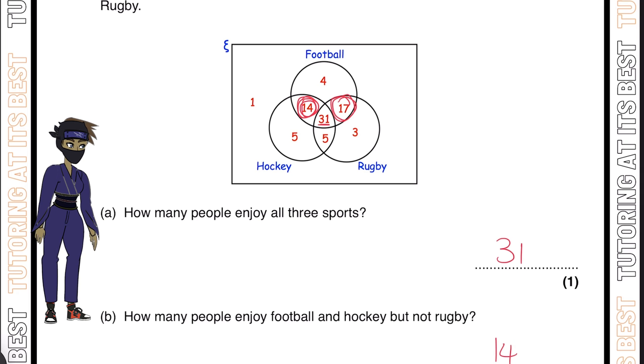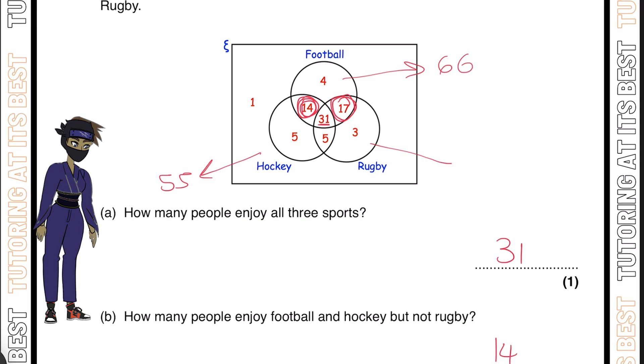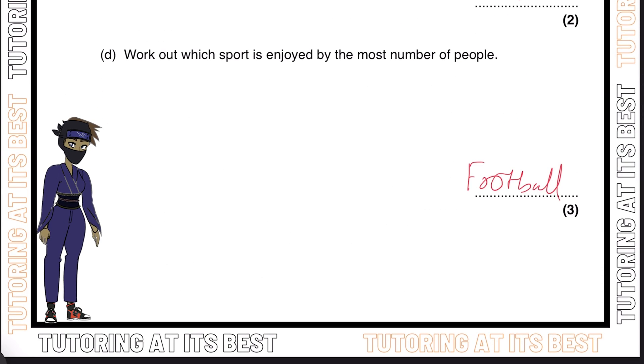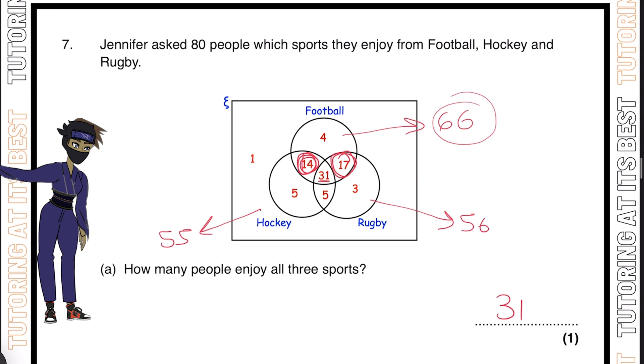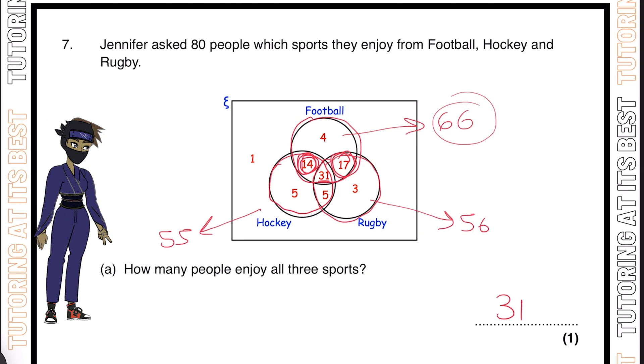For part D, work out which sport is enjoyed by the most number of people. The first thing would be to calculate how many people like hockey, which is 55. Then everything within football, which is 66, and rugby, which is 56. Altogether, we know football is most popular. That's by simply adding up all of the rings, one by one, until you get the total answer.